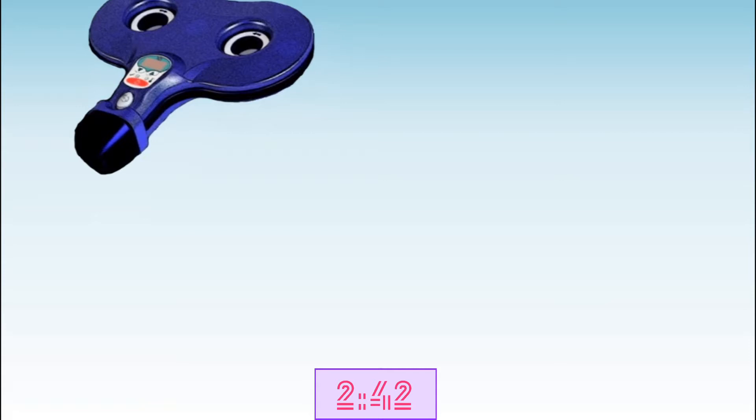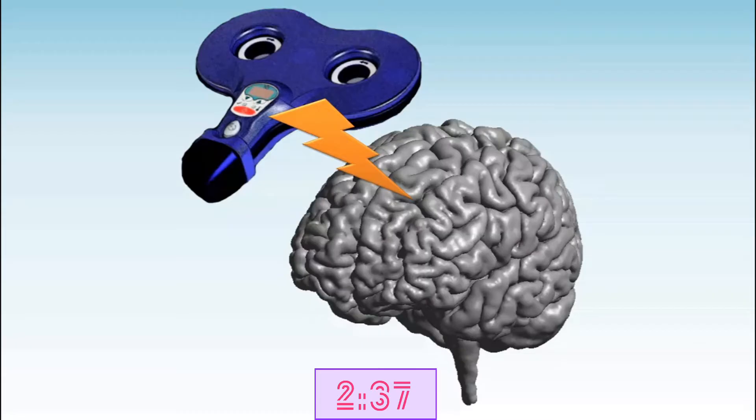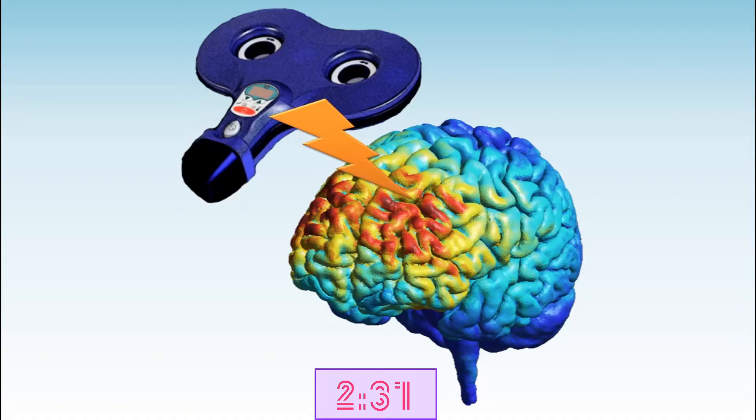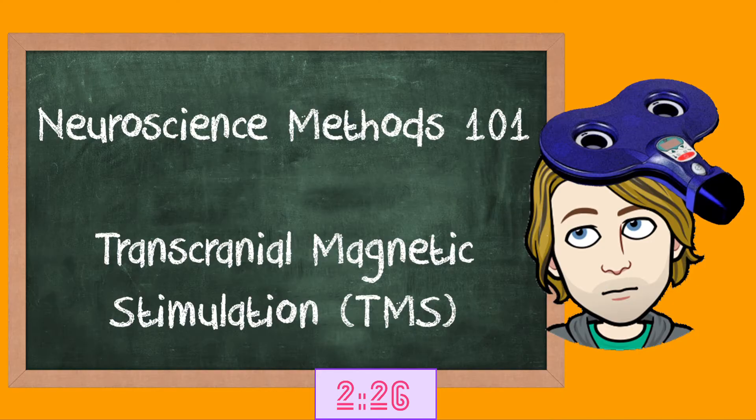First, they use transcranial magnetic stimulation or TMS to stimulate the brain. With TMS, the brain can be stimulated from the outside in a non-invasive way, which gives an indication about the activity of the brain. If you want to learn more about TMS, have a look at our introductory video on this technique.